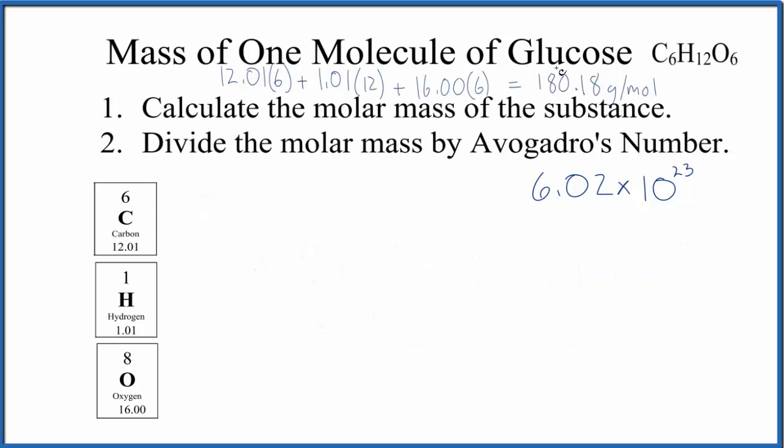So now all we need to do is divide that 180.18 grams per mole, the molar mass for glucose, by Avogadro's number. That'll give us the mass of one molecule of glucose. But let's do this with conversion factors to make sure we get the right units.